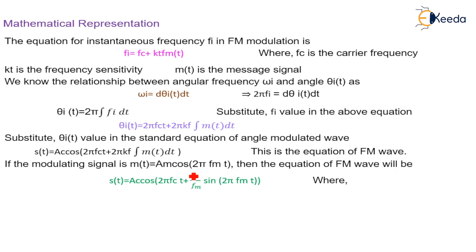Then, the equation of FM wave will be s(t) equal to Ac cos(2π fc t plus delta by Fm sin(2π Fm t)). Here, modulation index is indicated by delta by Fm, which has the value kf times Am times Fm.